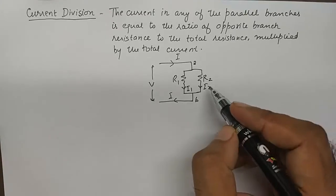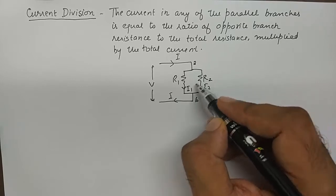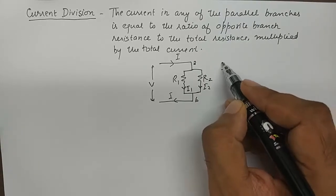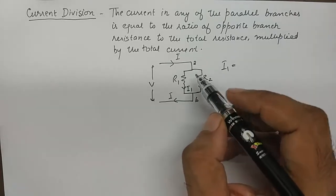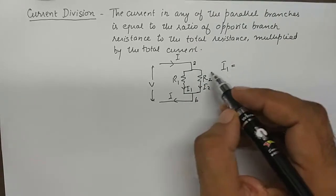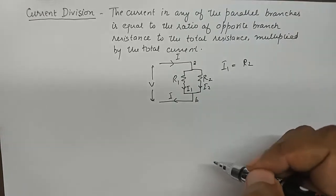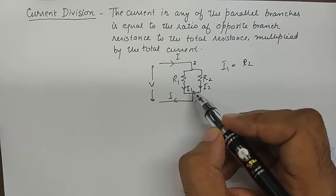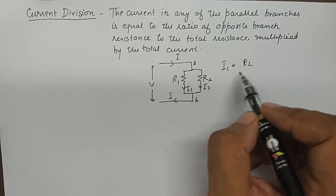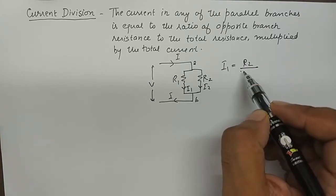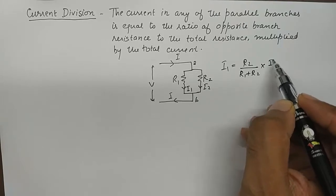In other words, if we were to find I1, it is equivalent to the ratio of opposite branch resistance, which is R2 in the case of I1, upon the total resistance in all the parallel branches, which is R1 plus R2, multiplied by the total current which is I.